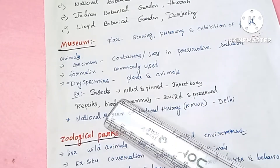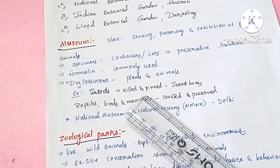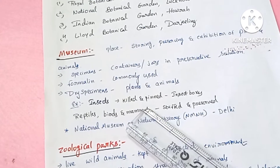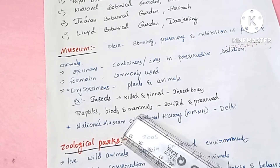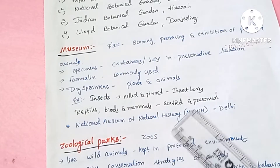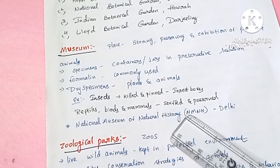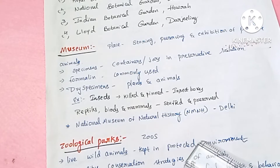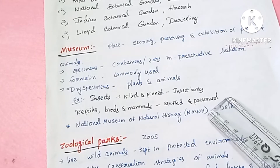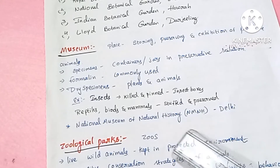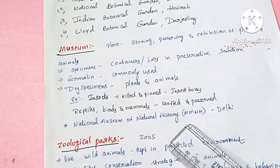For small living organisms like insects, insect boxes are used — the insects are killed and then pinned into the box. For large animals such as reptiles, birds, and mammals, the specimen is cleaned, stuffed, and then preserved using preservative chemicals. An important example is the National Museum of Natural History, located in Delhi.